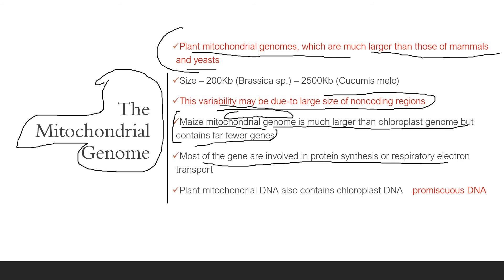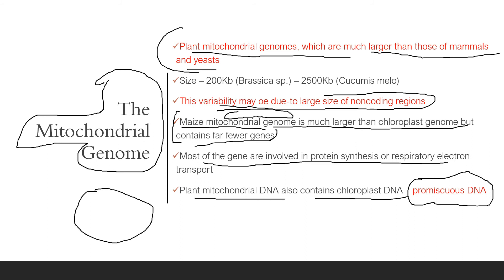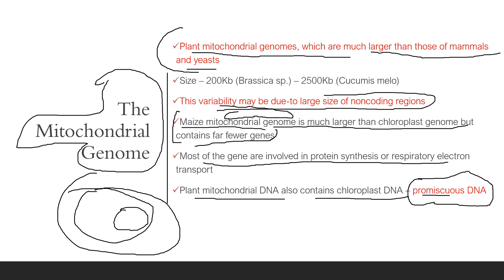Most mitochondrial genes are involved in protein synthesis or respiratory electron transport. Plant mitochondrial DNA also contains chloroplast DNA, collectively known as promiscuous DNA. Because the mitochondrial DNA is so large, it can engulf chloroplast DNA within itself — the combined entity is known as promiscuous DNA.